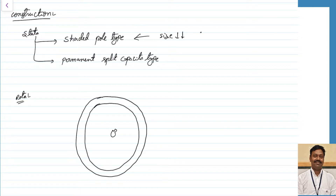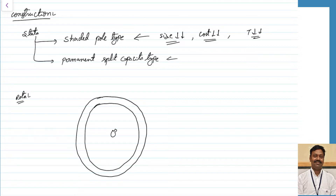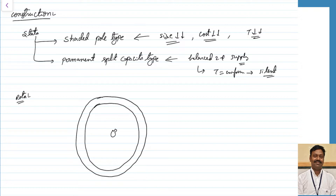The shaded pole construction is done where the size should be less and cost should be less. The disadvantage of the shaded pole motor is the torque will not be uniform because the rotating magnetic field produced is not uniform. Automatically the torque produced will be less and not uniform, so silent operation will not be possible because of non-uniform production of torque. With the permanent split capacitor type, we can produce a balanced two-phase supply, giving a balanced rotating magnetic field of constant magnitude. Due to this the torque will be uniform and operation will be more silent compared to the shaded pole.